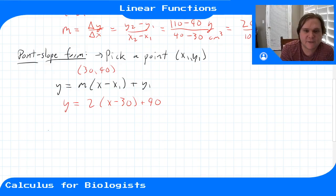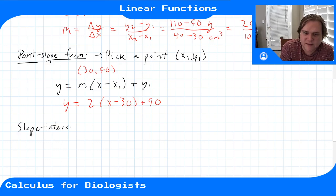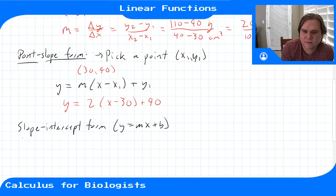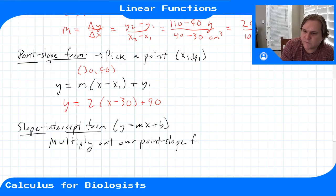But then let's say you wanted to know the intercept, right? We don't know what the mass of that container was, so maybe we want to figure out what the mass of the container is. So we want to put this into slope-intercept form. So to get to slope-intercept form, y equals mx plus b, we need to multiply out our point-slope form equation.